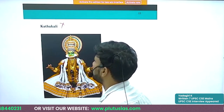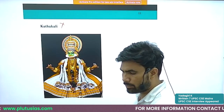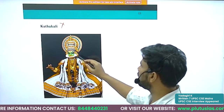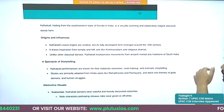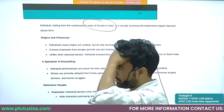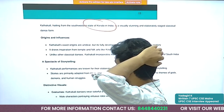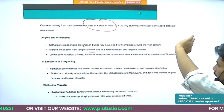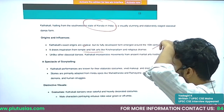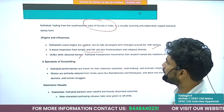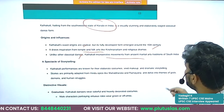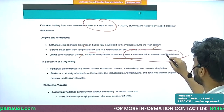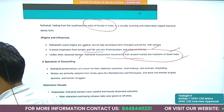Kathakali is famous not only for its dance performance but also for its elaborate costume including a face mask. It has its origins in Kerala, the southernmost state of India. It draws inspiration from temple and folk arts like Krishnanattam and religious dramas. Unlike other classical dances, Kathakali incorporates movements from ancient martial arts traditions of South India.